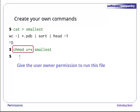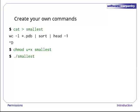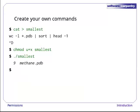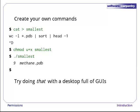The argument u+x tells chmod to add execute permission for the user without changing anything else. We can use minus to subtract permissions as well if we want. Now let's run smallest by typing its name just as we would type the name of any other program. We type ./smallest to tell the shell that we want the smallest that's in the current working directory. This guarantees that even if there's another program called smallest somewhere else on the computer, the shell will run ours. Sure enough, if we're in the directory containing our PDB files, our little program's output is exactly what we'd get if we ran that pipeline ourselves.